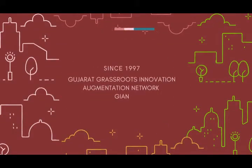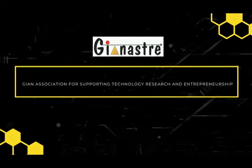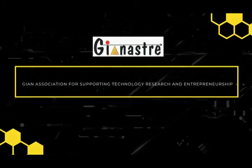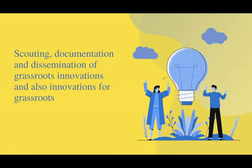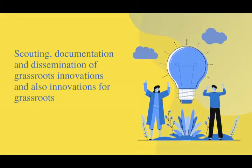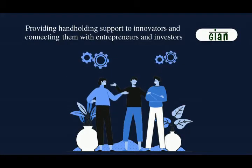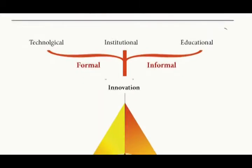Gujarat Grassroots Innovation Augmentation Network (GIAN) is a developmental organization registered as a trust and society in India since 1997. It also has a Section 8 incubator company called Gyanastra — the GIAN Association for Supporting Technology Research and Entrepreneurship. The major activities of GIAN are scouting, documentation, and dissemination of grassroots innovations and innovations for grassroots, providing hand-holding support to innovators and connecting them with entrepreneurs and investors — forming GIAN's golden triangle of creativity.